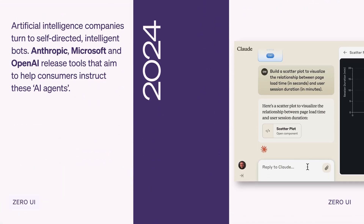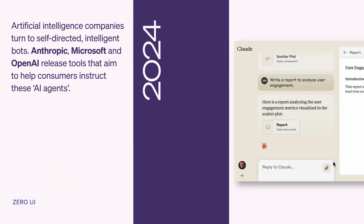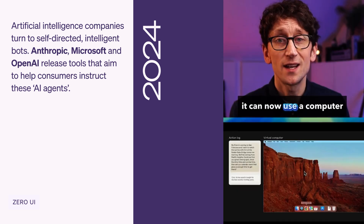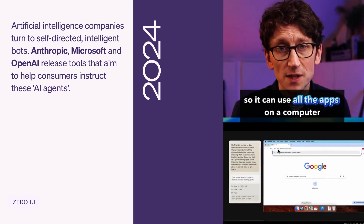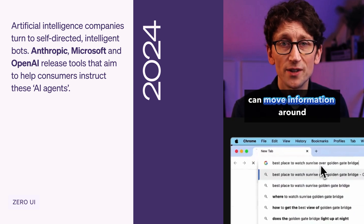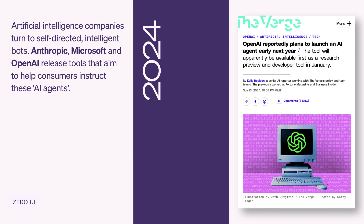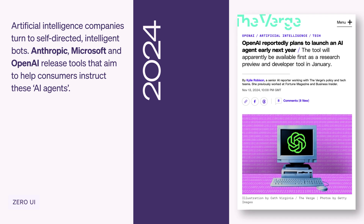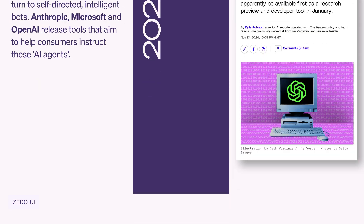During 2024, artificial intelligence companies turned to self-directed intelligent bots. Anthropic, Microsoft, and OpenAI released tools that aim to help consumers instruct these AI agents to carry out computing tasks for them with sophistication and ease.